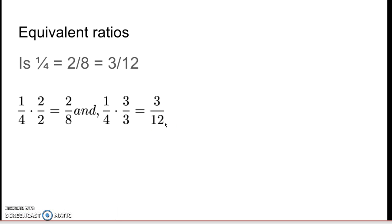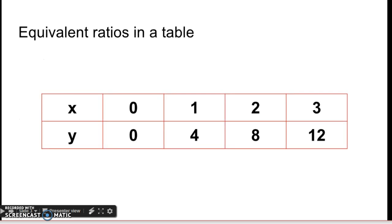Looking at ratios like fractions and multiplying by 1 to see if I can get an equivalent fraction proves that these are in a proportional relationship. So x and y here are in a proportional relationship because they start at 0, 0 and all of these ratios are equivalent.